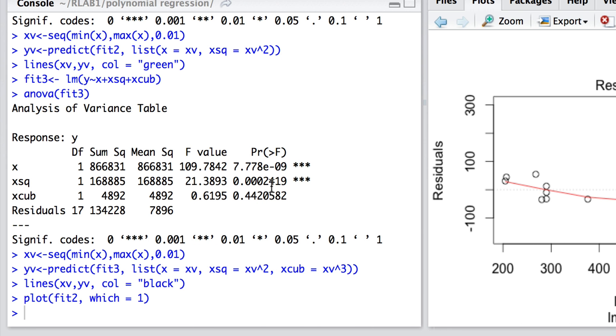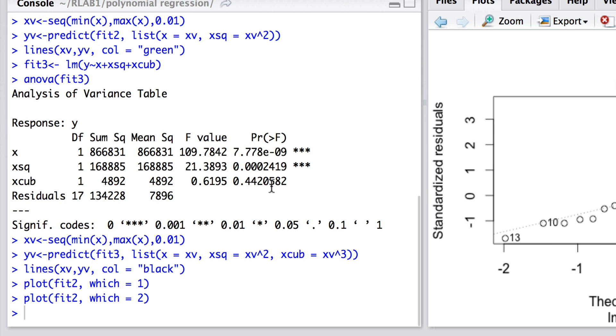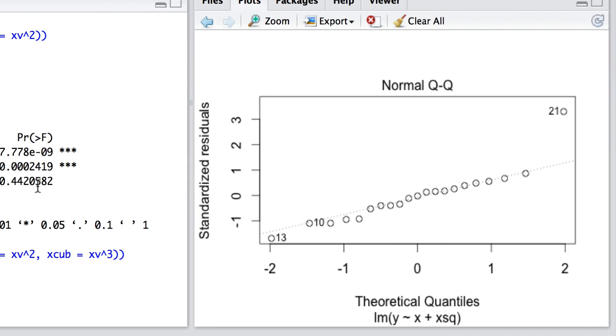If we had fitted the linear model, we might have seen some pattern in those residuals because in effect we're fitting the wrong model to the data since there was clearly curvature there. And here we can of course examine the normality, and overall the distribution of the residuals appears relatively normal.